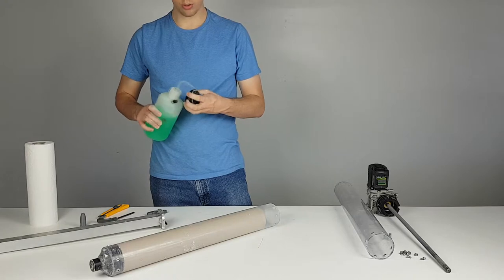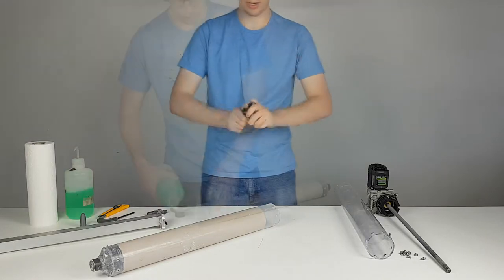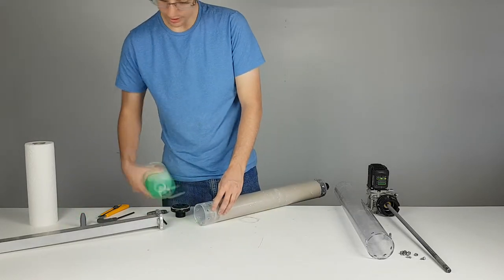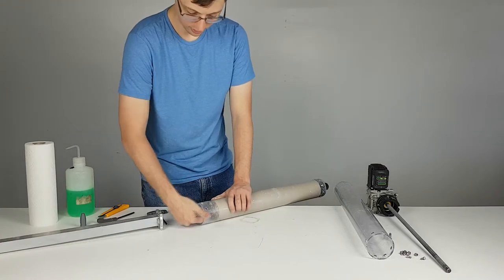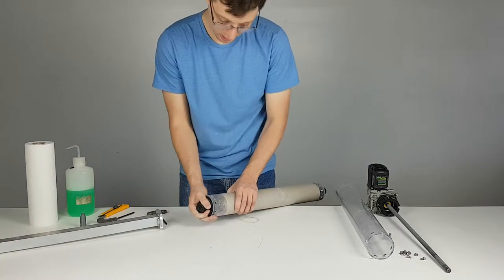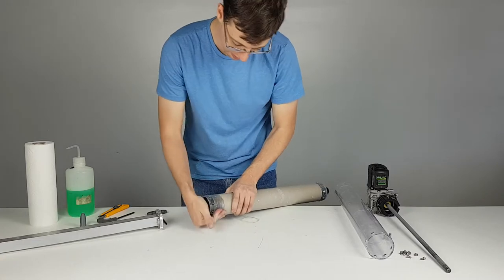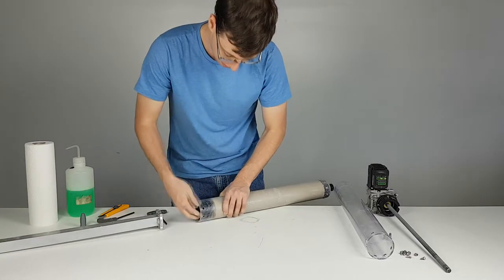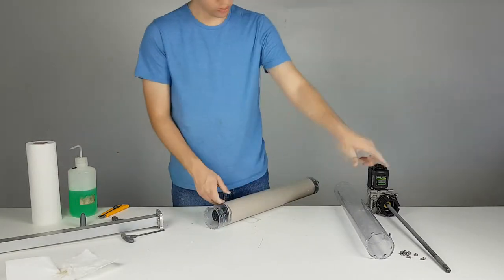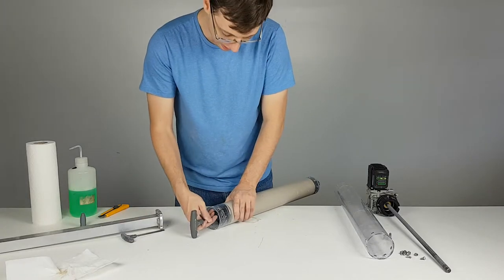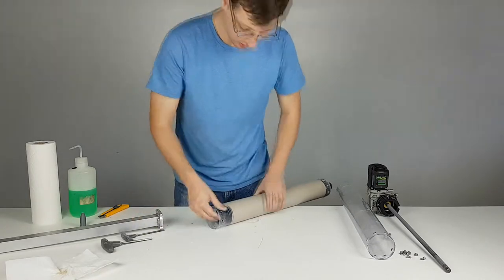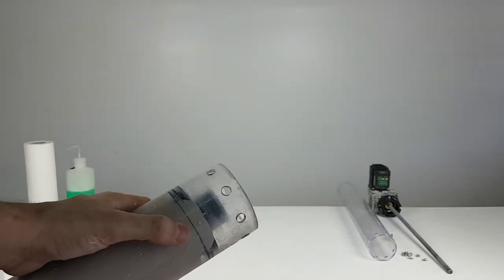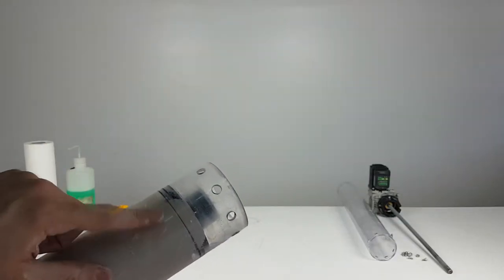We are going to add some soapy water to the piston as well as to the walls of the tube in order for it to slide down easier. You will want to have as small as an air gap as possible in between the piston and the clay. As you can see here the piston is making direct contact with the clay.